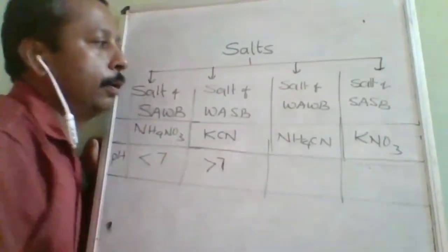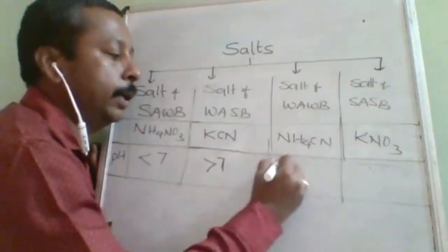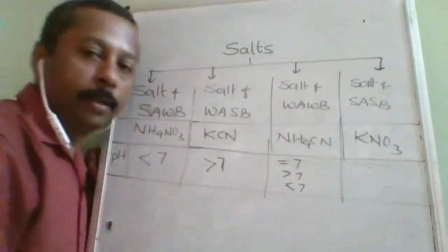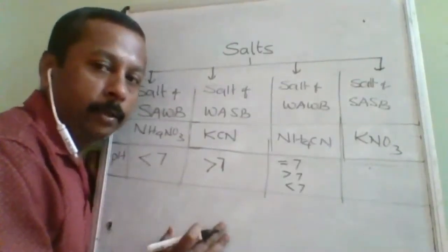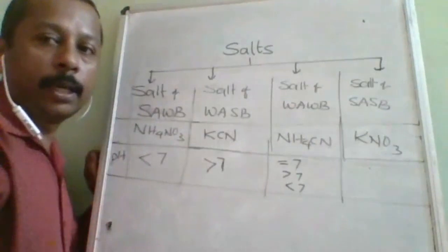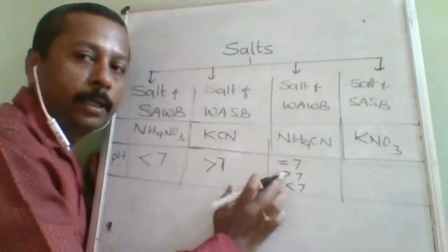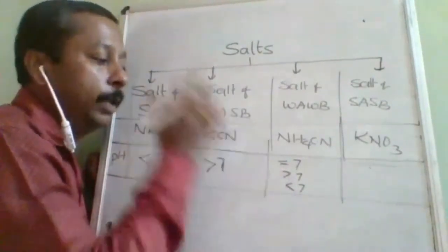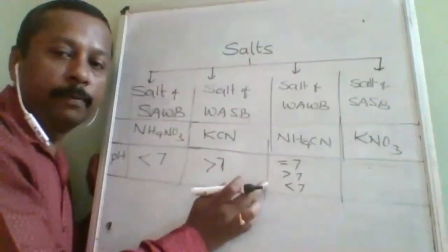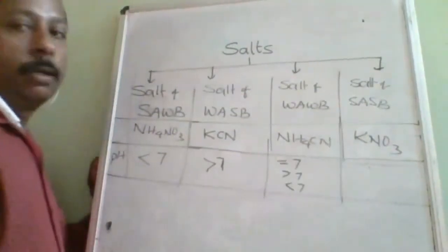For salt of weak acid and weak base, we don't know the comparative strength, so pH can be equal to 7, greater than 7, or less than 7. It depends on comparative strength: if acid is stronger, pH < 7; if base is stronger, pH > 7; if both are equally strong, pH = 7. We cannot confirm a fixed value.